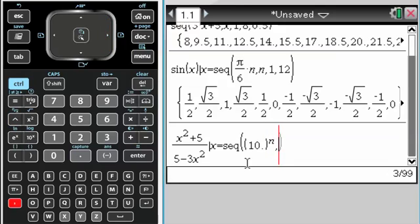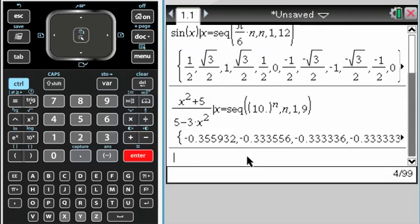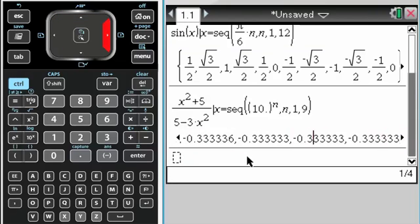To the n, and I want n to go from 1 to, let's just say, 9. So it's going to evaluate at powers of 10, and give me some decimals back. So then I can investigate this. I see that the numbers are getting closer and closer to negative one-third, which I would expect.